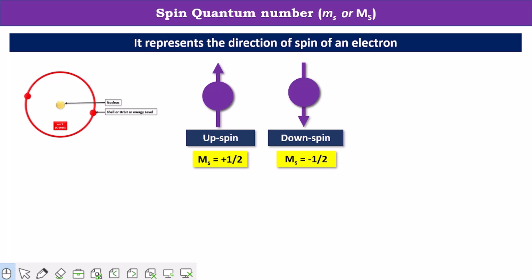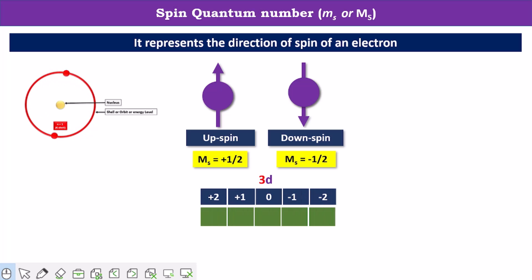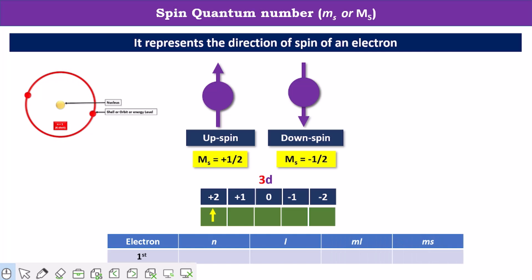Let's understand this concept using an example of a 3D orbital electron. This is the 3D orbital. Consider the first electron in this orbital and let's find out all the quantum numbers for this electron. There are four types of quantum numbers: first is principal quantum number, second is azimuthal quantum number, third is magnetic quantum number, and last is spin quantum number.